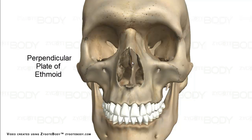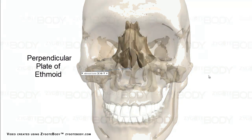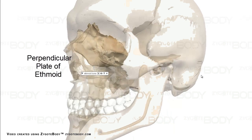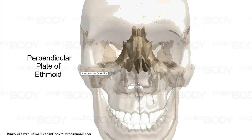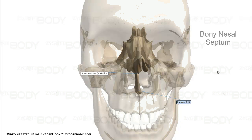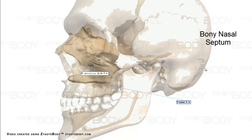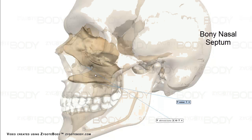There's one more bone that makes up the nasal septum: the perpendicular plate of the ethmoid. If we take a look at the two together, we can see the bony septum. The back of the wedge is going to be all vomer, and the smaller upper part is the perpendicular plate of the ethmoid.